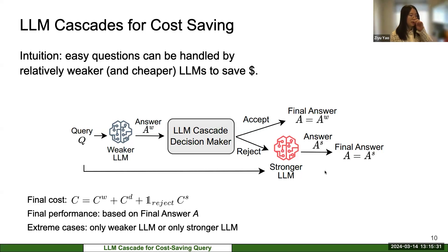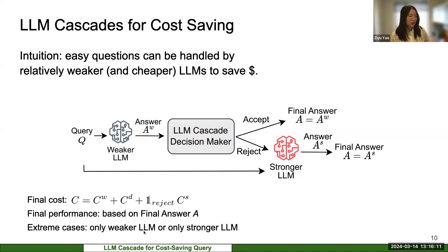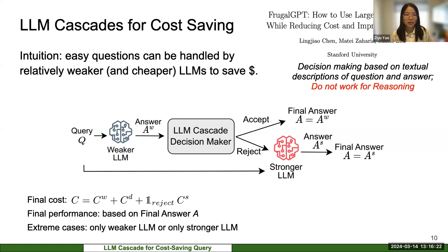To summarize: in this cascade framework, we have a weaker LM and a stronger LM, and we introduce the LM cascade decision maker. The final cost depends on whether we call the stronger LM or not. In this framework, the decision-making itself is essentially zero-cost, as we'll discuss later. The final answer comes from either the weaker or stronger LM depending on the decision maker. An extreme case would be using only the weaker LM or only the stronger LM.